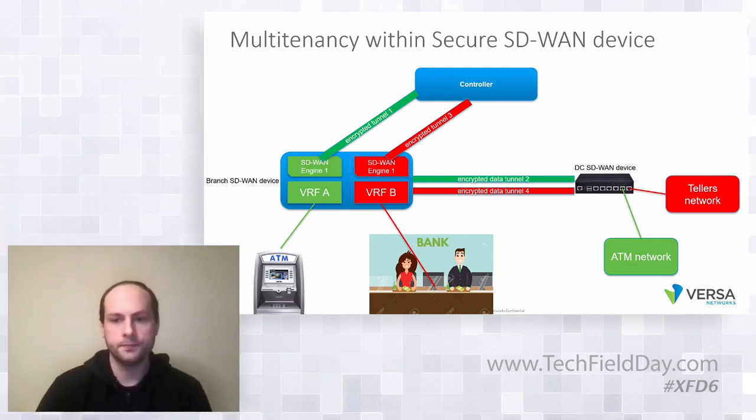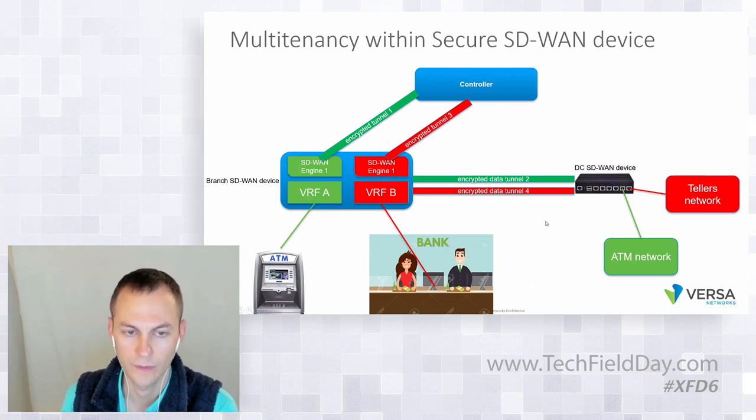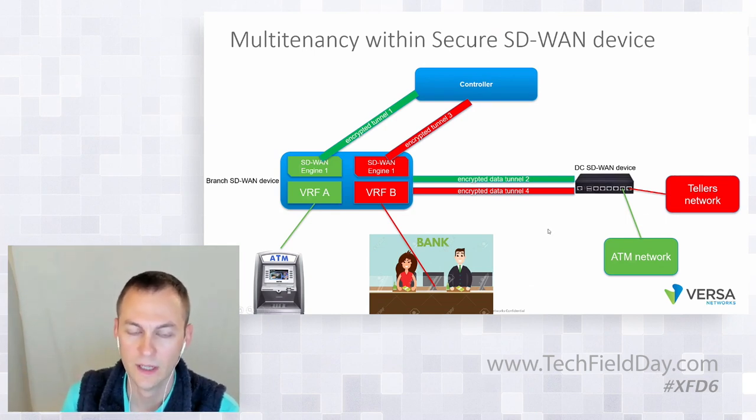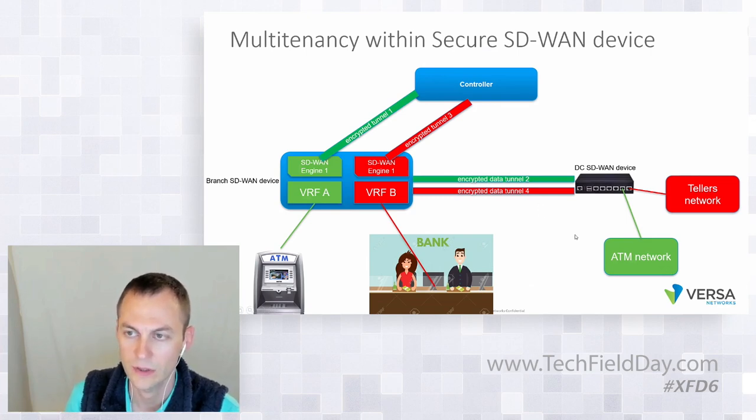This is Remington. I have a question about path selection for the various tenants. Can you control your uplinks and the path selection for each tenant — so that you could prefer using private circuits for ATM traffic, with failover maybe to the internet, or not failing over to a particular uplink to avoid certain media? Yes. And you can do this not only per tenant but also per VRF.